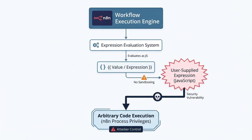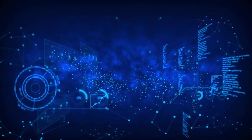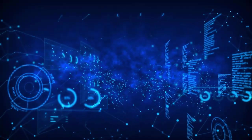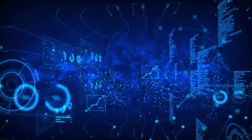What happens next is the attacker can execute arbitrary JavaScript code with the same privileges as the N8N process itself. Even worse, even an authenticated user can run this exploit — no admin privileges are required.